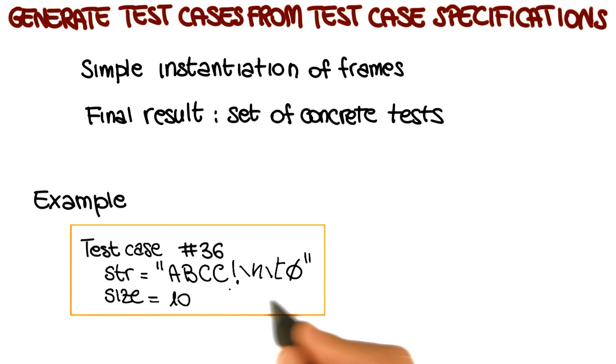String str will have this value, and the integer size will have this value. These two values satisfy what this test case specification was, which was having a string that contains special characters. Here we have two special characters, like the new line and the tab, and we have a size which is greater than zero, in particular 10.